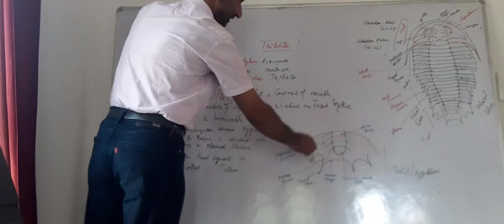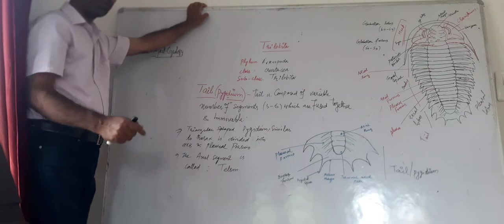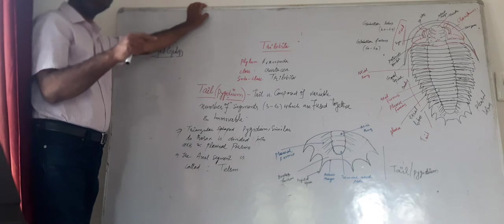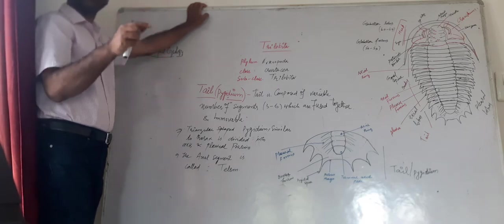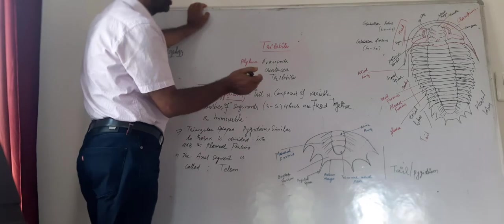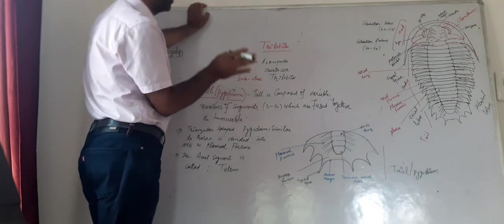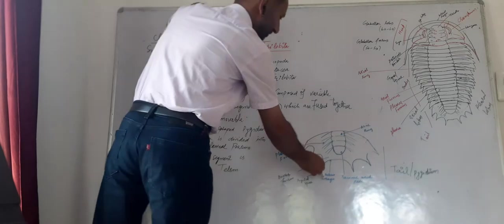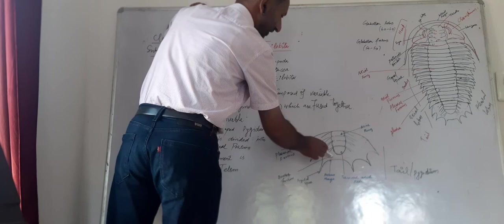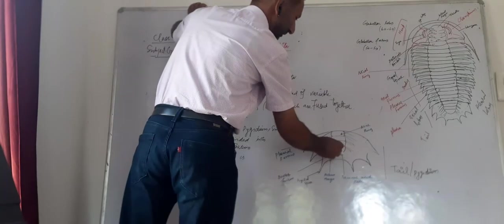You have also seen pygidial spines. Here in the tail these spines are known as pygidial spines, whereas in the body we call them pleural spines and in the head we call them genial spines. So these spines are called with different names in three different parts: head, body and tail. So these are the posterior margins of this.